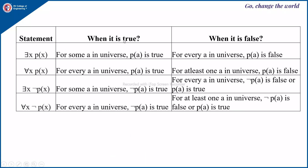Now let us see some statements and when they are true or false. First, ∃x P(x) is true for some element a in the universe if P(a) is true, and false if for every a in the universe P(a) is false. ∀x P(x) is true for every a in the universe if P(a) is true, and false if for at least one a in the universe P(a) is false.